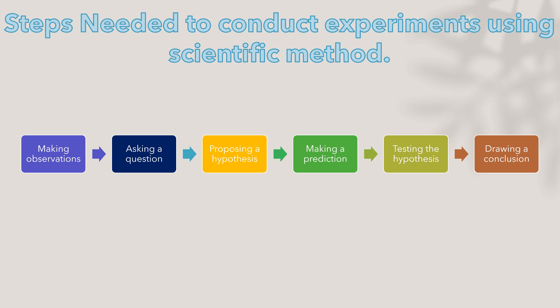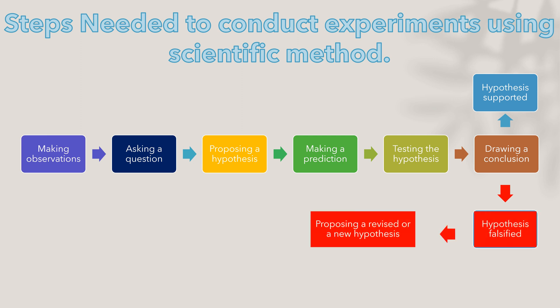If the conclusion supports the hypothesis, congratulations. But if it does not, we consider the hypothesis to be falsified, and thus we have to propose a revised or a new hypothesis. I will use an apple browning experiment as an example to explain.